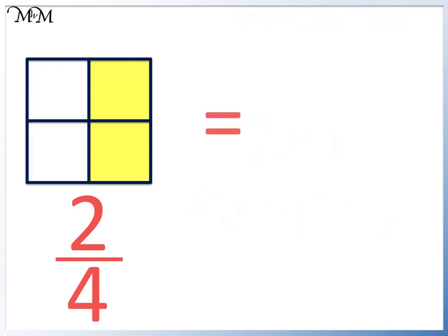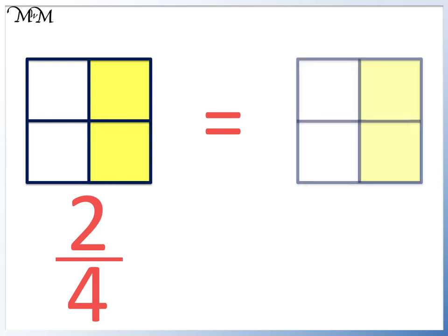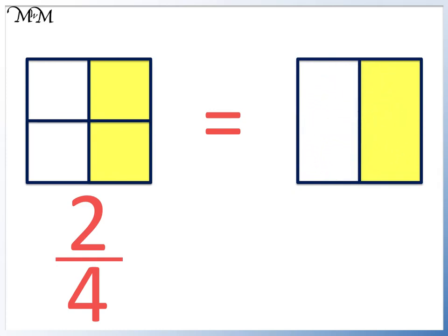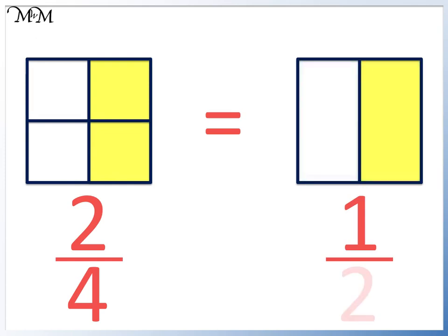Two quarters is the same as another fraction. We can draw the same shaded area but remove this dividing line to leave two parts. Two quarters is the same as one out of two parts. Two quarters and one half are the same size.